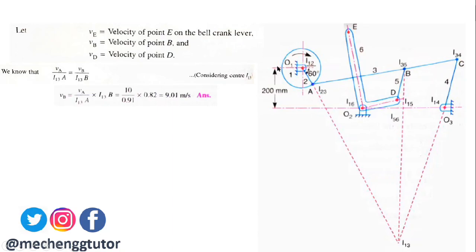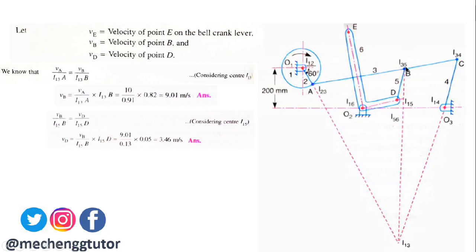Next, considering instantaneous center I15, we have: VB / I15B = VD / I15D. Using this equation, we calculate the velocity of point D, which comes out as 3.46 meters per second.